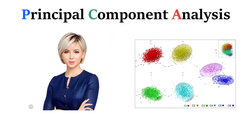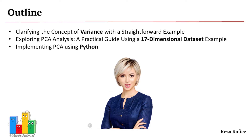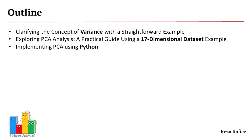In this video, we will examine the Principal Component Analysis or PCA technique, an essential visualization approach in data analysis and pre-processing. The aim of this video is to explain the theoretical side of PCA and to provide examples of its application. We will begin with a non-rigorous motivational example from multivariate data analysis in which we will attempt to extract some meaning from a 17-dimensional data set. We will first clarify the concept of variance with a straightforward example, then explore PCA analysis using a 17-dimensional data set example, and finally implement PCA using Python.